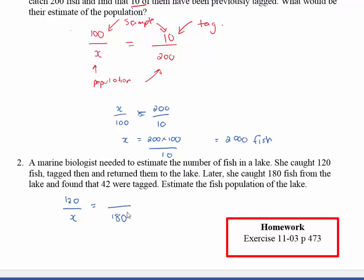And of that 180, 42 were tagged. You can see I've got a nice simple equation that I can solve. So I can turn my fractions upside down, and once I've done that I can say x equals 180 times 120 divided by 42.